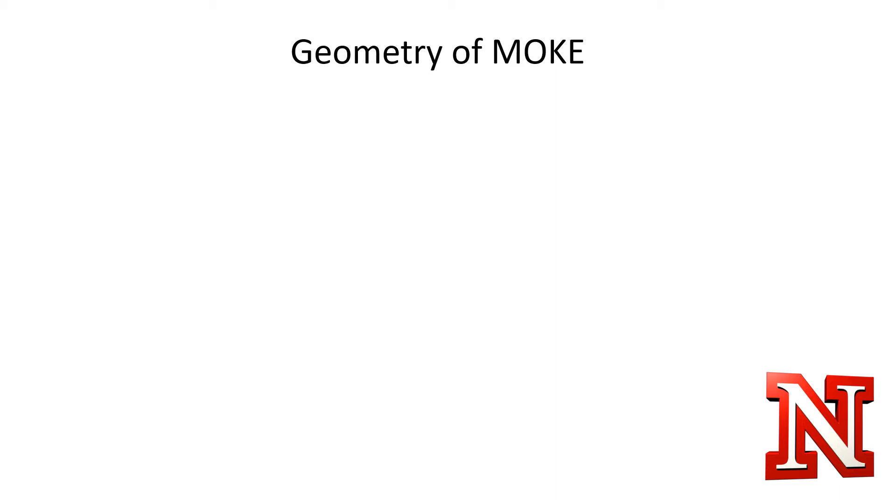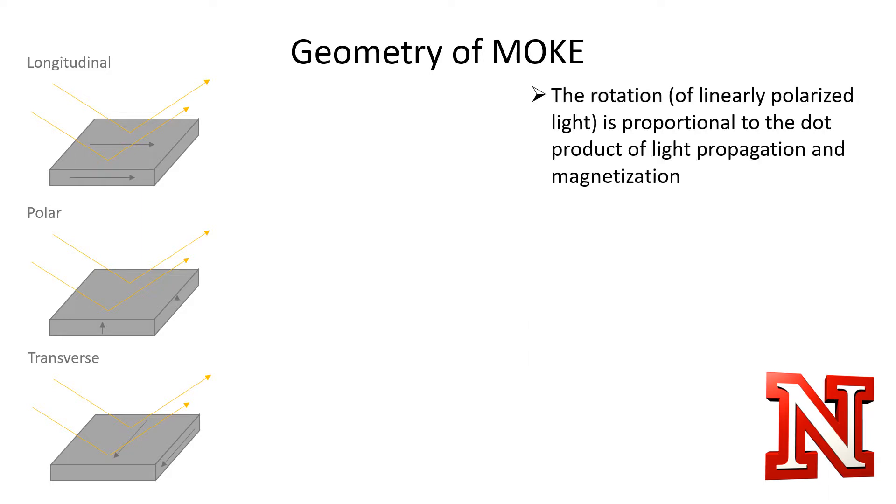For the simplest case where we're dealing with linearly polarized light reflecting off a magnetic surface, there are three basic geometries of the magneto-optic Kerr effect, one for each dimension. The Kerr effect in this simple case is proportional to the dot product of the vectors that light is traveling and the magnetization of the material. A vector has a magnitude, but it also has a specific direction. And so the dot product is only equal to the simple product of the two vectors' magnitudes if the directions are exactly the same.